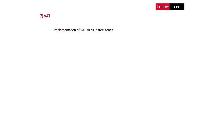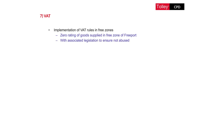From a VAT perspective, there is introduction of measures relating to VAT-registered businesses authorised to operate in a free zone customs site of a freeport. The main benefit for these businesses is that they will be able to zero-rate supplies and also services carried out on goods in those zones will be capable of being zero-rated, subject to meeting conditions. There are anti-avoidance provisions to make sure that when goods leave a free zone there is no onward supply of those goods.